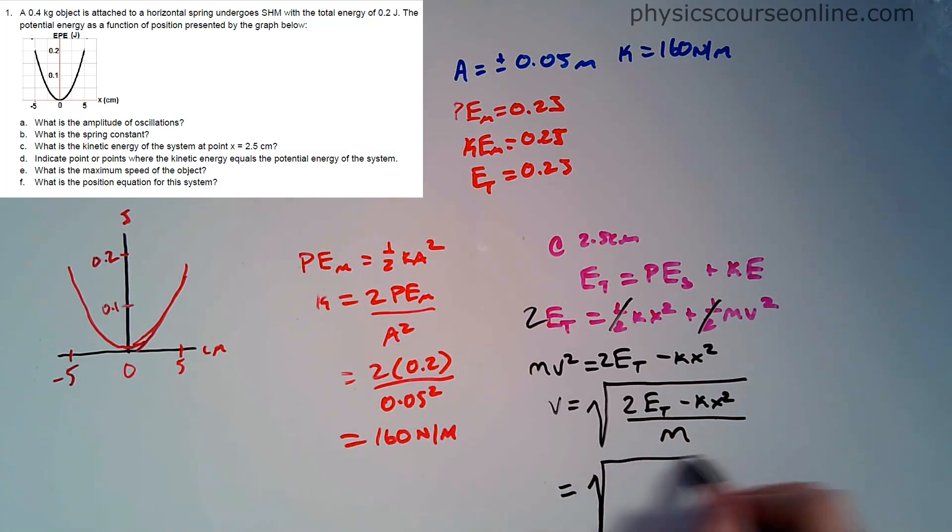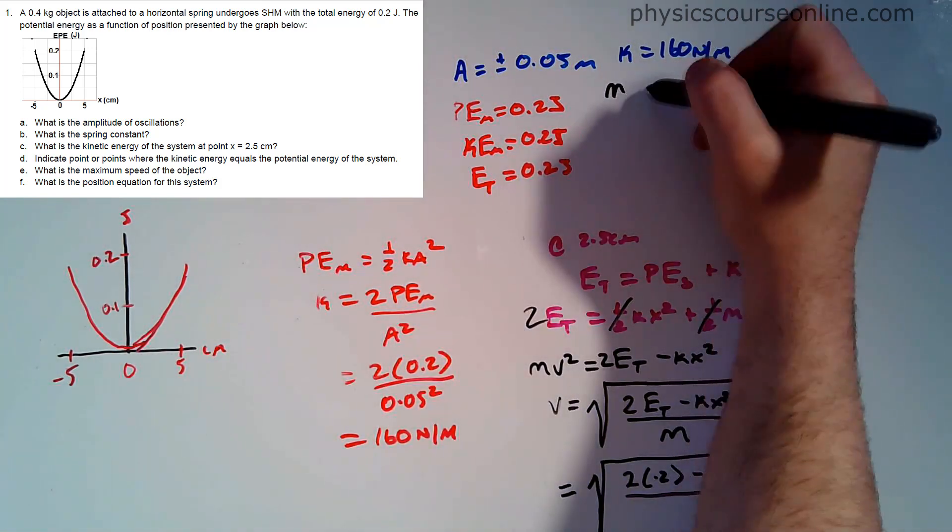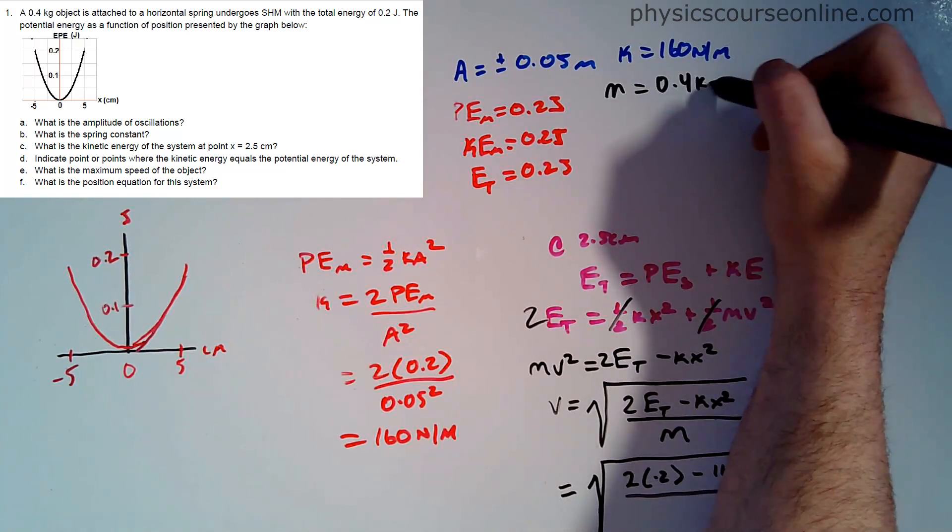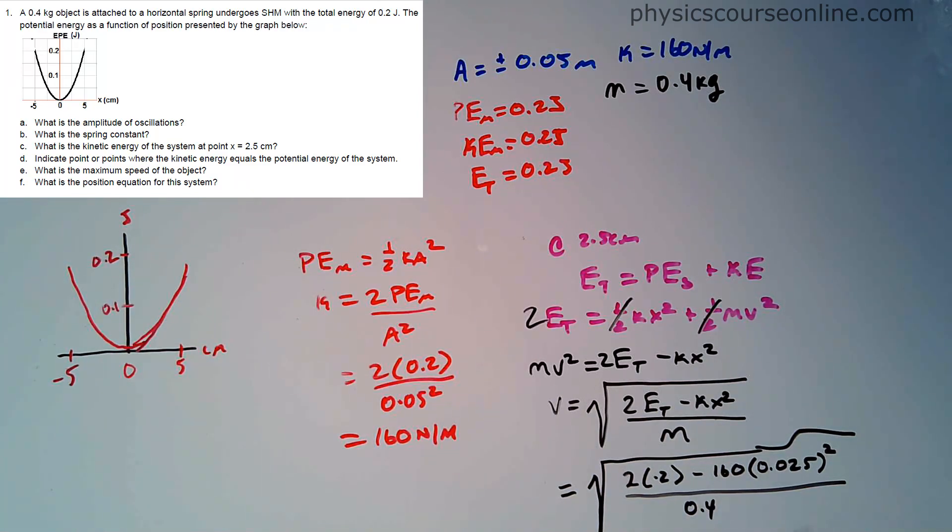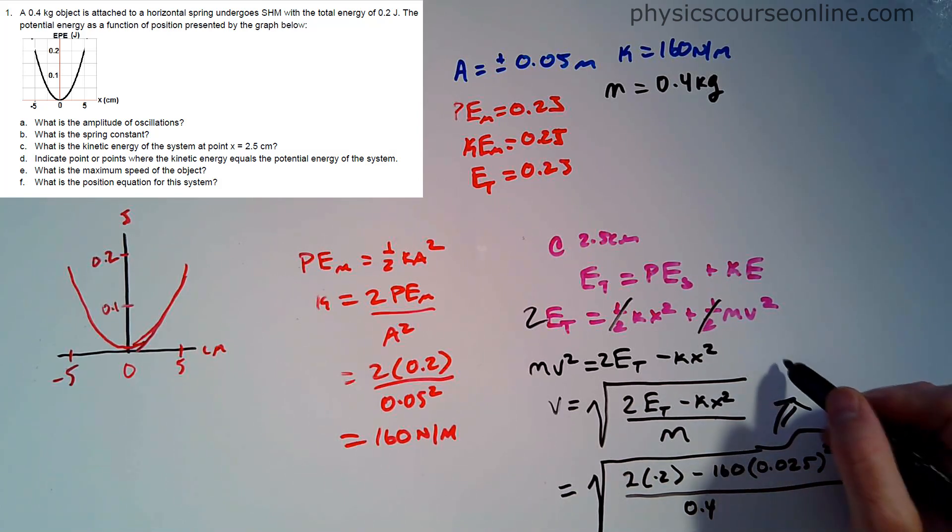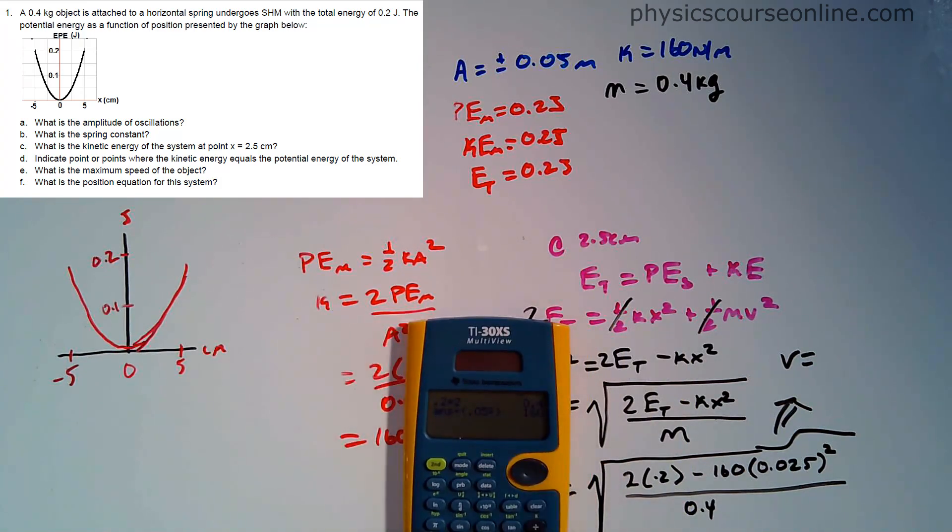So 2E total minus kx squared, divide that by the mass. 2 times 0.2, that's my total energy of the system, minus 160 times the position that we're at in this part of the problem, 2.5 centimeters or 0.025 meters. We're going to square that term, divided by the mass, which was 0.4 kilograms.